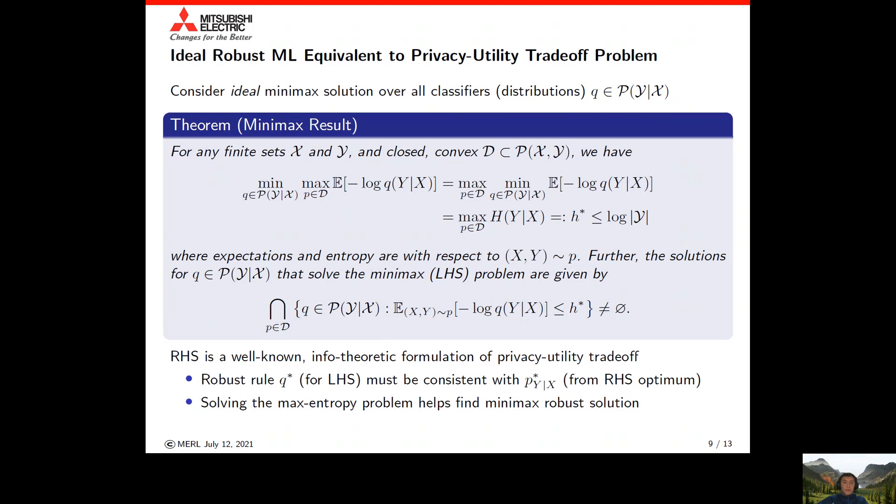Interestingly, with the min moved to the inside, that further reduces down to a maximum conditional entropy problem. So the solution boils down to simply maximizing conditional entropy over the constraint set for the joint distributions over x and y on that constraint set.